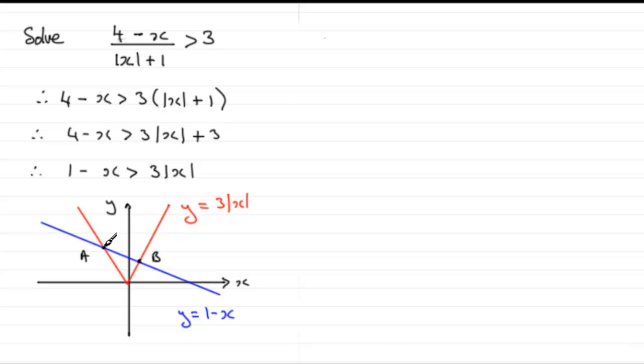So we can get these points a and b by doing simultaneous equations between the graphs. So for instance, if we want to find out what a is, what I've got to look at is where this part of the graph of y equals 3 mod x intersects the graph of 1 minus x.